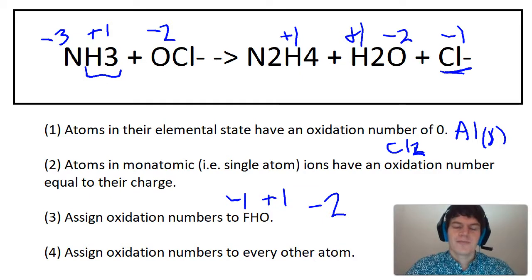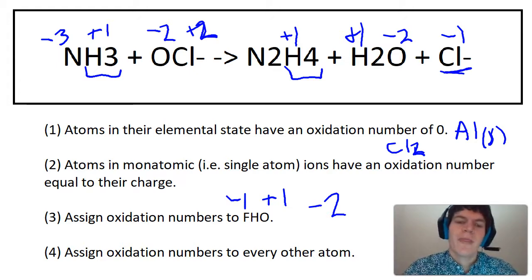Next, OCl, to balance this out, chloride is going to have to have a charge of plus two to make it neutral. And then on the right side, nitrogen is paired up with four hydrogens, so overall this pair of four hydrogens is a plus four charge, plus four oxidation number, and therefore nitrogen must be a minus two.